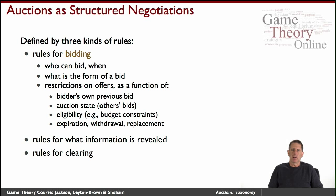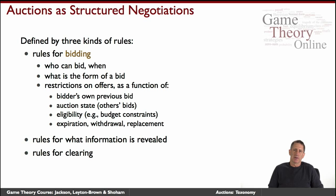What do we mean by bidding rules? We really mean who can bid, when they bid, what they can bid, and some restrictions. For example, in an ascending bid auction, you have to bid above the current highest price; in other auctions you submit your own price. We may not allow people to bid arbitrarily high — there may be budget constraints. Bids may have expiration dates, and they may be subject to withdrawals or not.